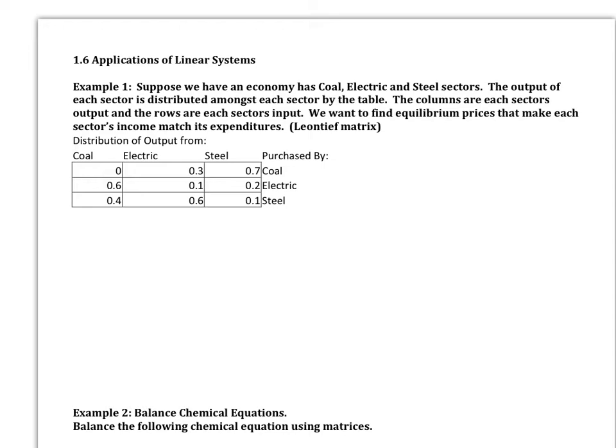Leontief is the person who developed a lot of this. The output of coal is this column, electric is this column, and steel is this column. Notice each column adds up to one, representing 100%. So coal's output is 100% of whatever they're putting out, and same for electricity and steel. When we go across the rows, this is the percentage bought by coal, this is the percentage bought by electric, and this one is bought by steel. That doesn't necessarily add up to one because you're taking from three different sectors.